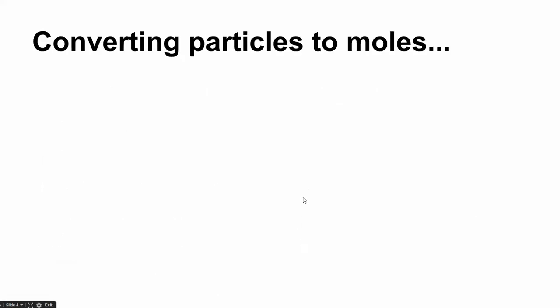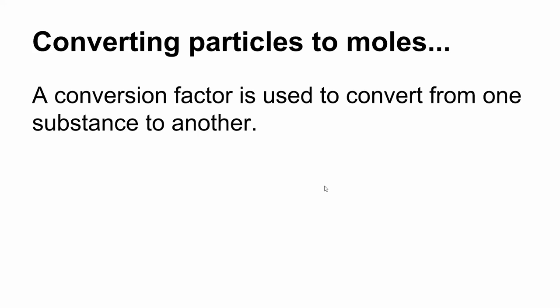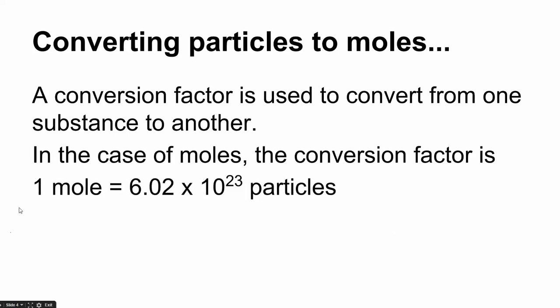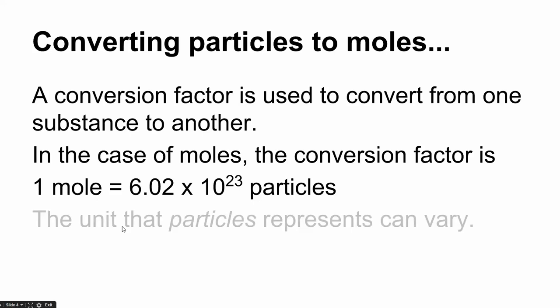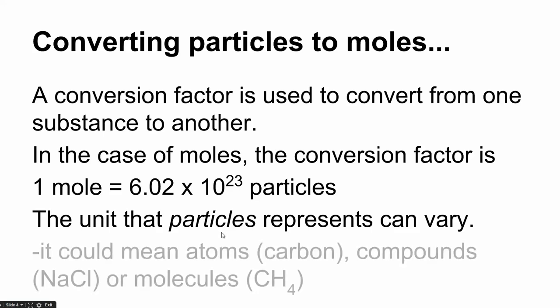So we're going to look at converting from particles to moles or from moles to particles using a conversion factor. We've looked at conversion factors in the past. We looked at them at the beginning of the year in preparation for what would be happening now with the mole. We can use the conversion factor to convert from one thing to another. And in the case of moles, the conversion factor looks like this. One mole is equal to 6.02 times 10 to the 23rd particles. When we set it up like a conversion factor with one on top of the other, we would set it up so that the units we're trying to get rid of would cancel.